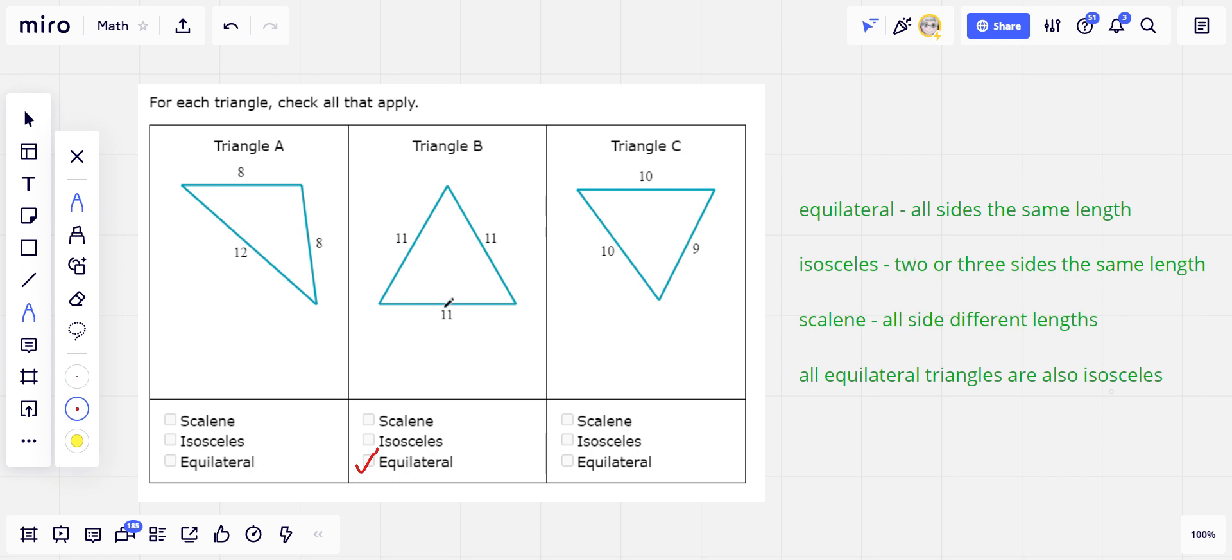But any triangle that has three sides the same length also has two sides the same length. So this triangle B here is actually equilateral and isosceles at the same time. And then it looks like triangle C has two sides that are 10. So those are two sides the same. That's isosceles. It's not equilateral because the third side is a different measure from the two 10s.